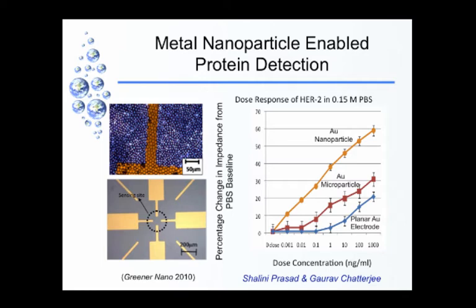If you had just a flat electrode, you could get almost no signal. If you used microparticles, you increased the signal slightly, but when you went to nanoparticles, the percentage change in impedance went up dramatically. You could end up measuring small concentrations above the noise more effectively by using nanoscale structures.